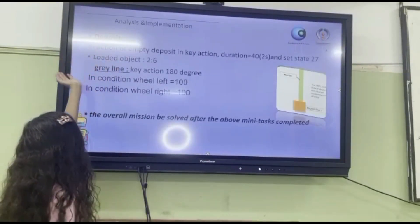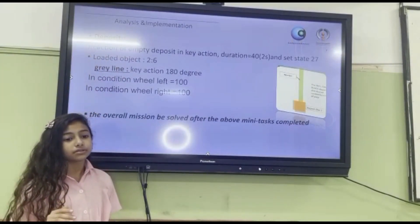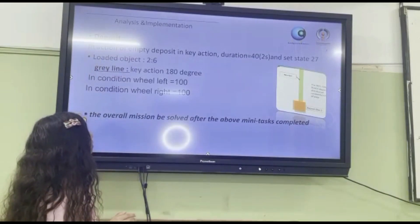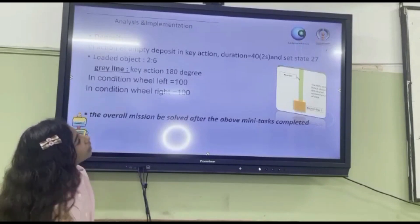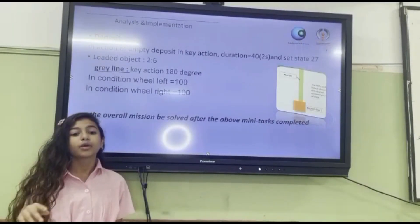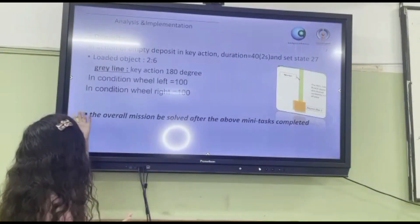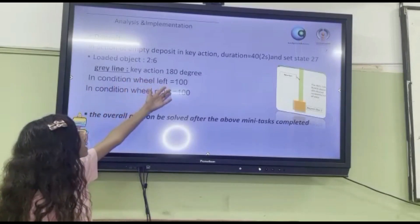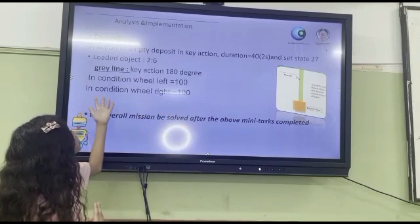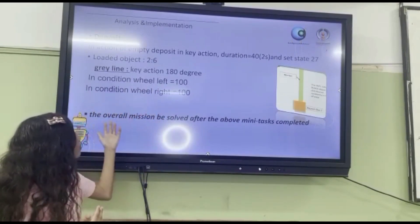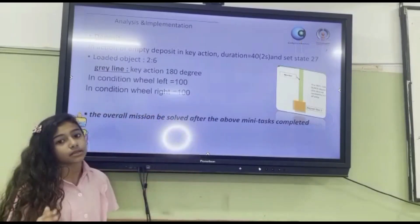Analyze and implementation. The buzzer in action is embedded in the key action. Duration equals 30 seconds and set state equals 127. Loaded object 2 to 6. Gray line, key action 180 degrees. In condition wheel left equals 100, in condition wheel right equals 100. The overall measure will be solved after the above mini tasks are completed.